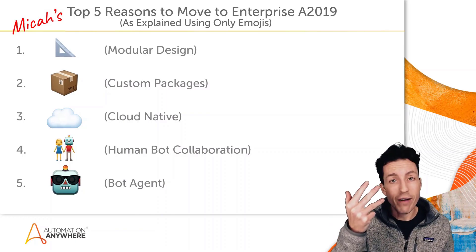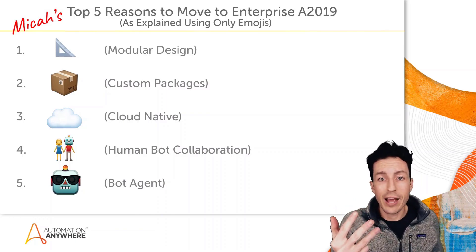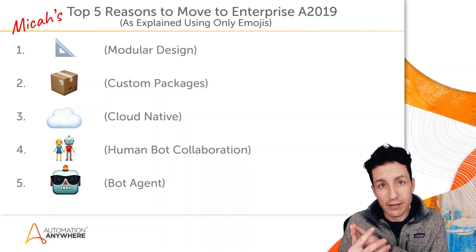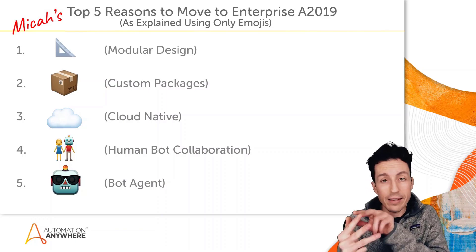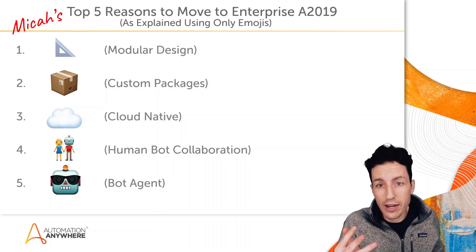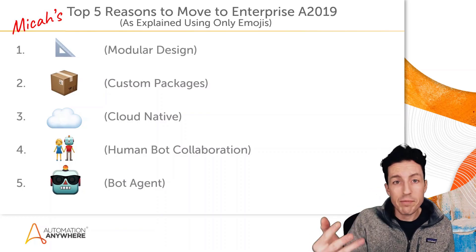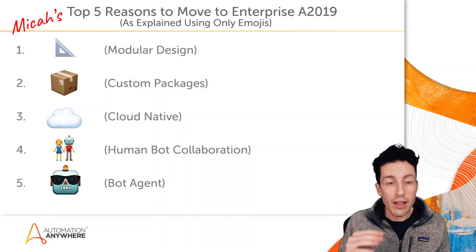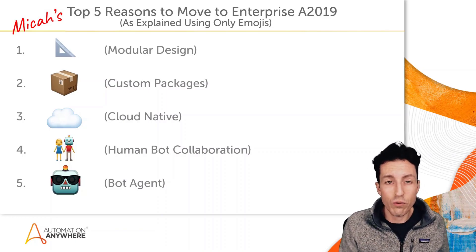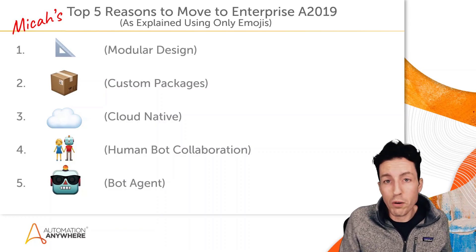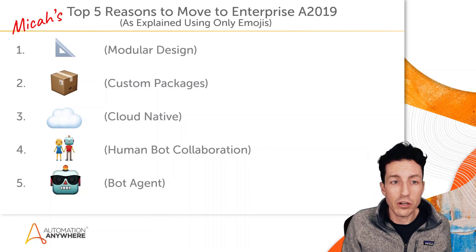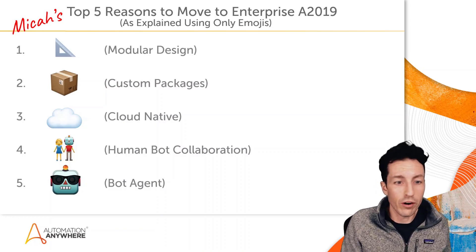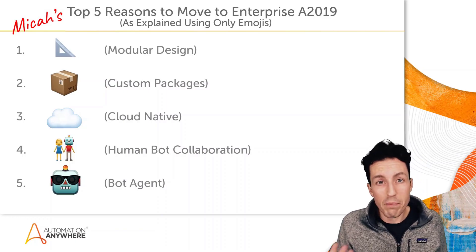My bot will still work fine even if I've upgraded my Control Room, because it references specific versions of those packages. If I want to upgrade — say the Salesforce package has new actions that would add value — I can upgrade just that one package, use the new features, retest, leave the other three packages alone, and redeploy. The next run uses just the upgraded Salesforce version but still the older versions of the other three packages.